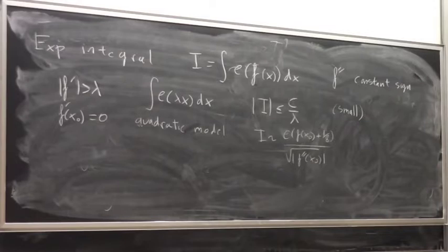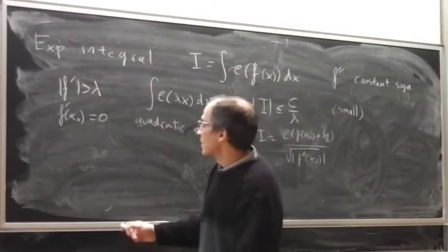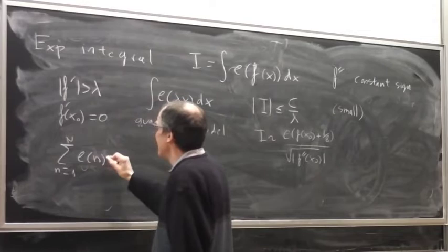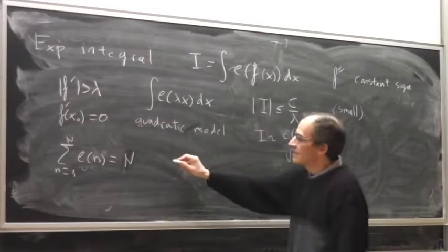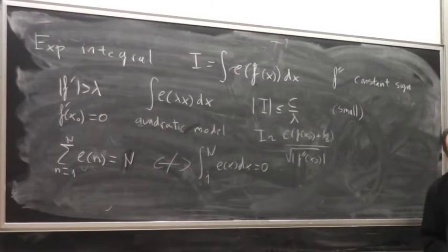In principle, it seems impossible to approximate exponential sums with exponential integrals. For instance, if you consider the sum and the corresponding integral, there is no obvious relation because the integral might be zero. In principle, no relation — but there is a relation that people in number theory exploit very often.